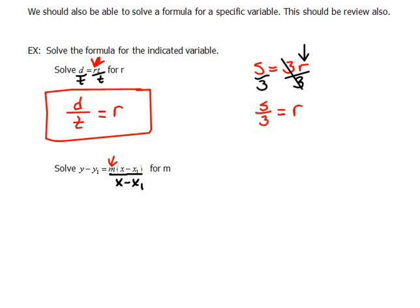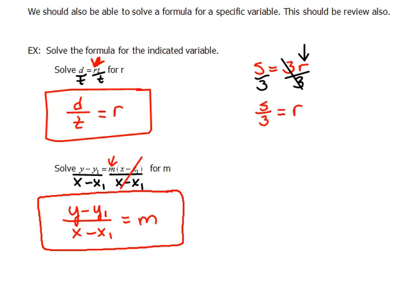Well we can do that as long as we do it to both sides. So now on the left, we have y minus y1 over x minus x1 equals, and on the right hand side, we multiplied and divided by the same thing, so those cancel out, and so we're just left with m. Now we solved for m because m is alone.